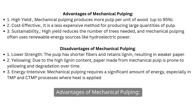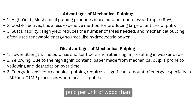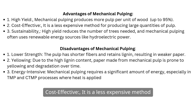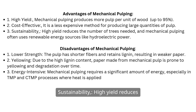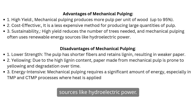Advantages of mechanical pulping. One: high yield — mechanical pulping produces more pulp per unit of wood than chemical pulping, up to 95%. Two: cost effective — it is a less expensive method for producing large quantities of pulp. Three: sustainability — high yield reduces the number of trees needed, and mechanical pulping often uses renewable energy sources like hydroelectric power.